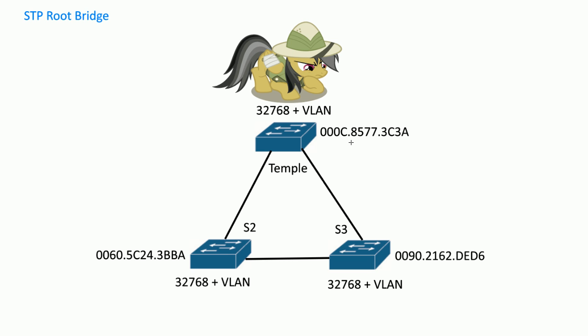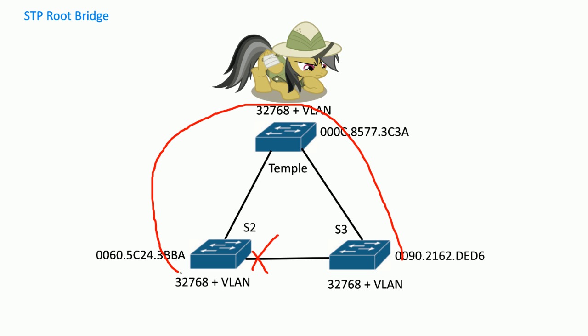So this switch becomes the root bridge. Once it becomes the root bridge, we can follow the rest of the protocol. The switches may decide to cut certain links — BAM, you're going down. When broadcast frames would loop around, they'll be cut off because there's only one path to the root bridge.